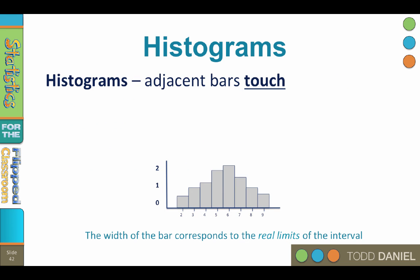Unlike a bar chart, the adjacent bars in a histogram touch. This indicates that the data are connected to each other. We could not rearrange the numbers 1 through 5 to run 1, 4, 2, 5, 4 — they must be in numerical order, and each bar is therefore connected to the next.